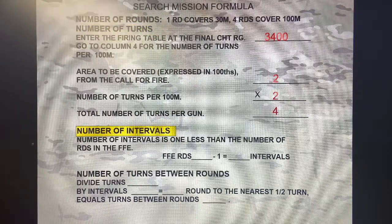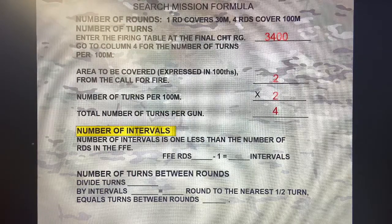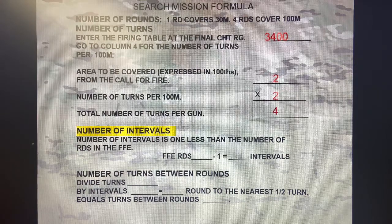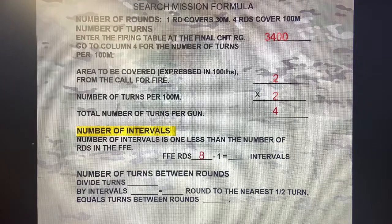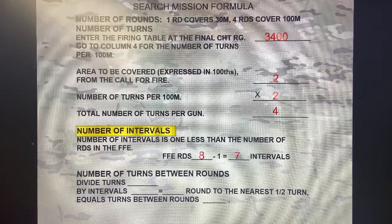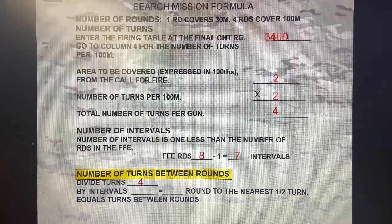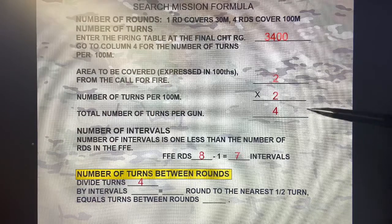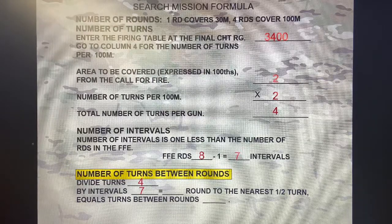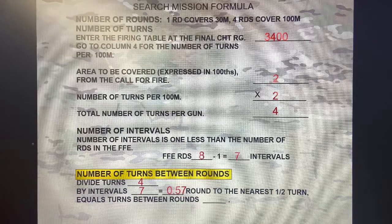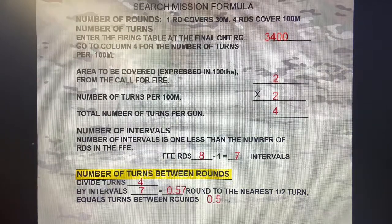Number of intervals is one less than the number of rounds in the fire for effect. Remember, our fire for effect was eight rounds; we minus one to give us 7 intervals. Then lastly, our number of turns between rounds: divide our total turns of 4 by our intervals of 7. That gives us 0.57, which we round to the nearest half turn — so 0.5. That means each gun is going to manipulate their elevation by half a turn: fire, half turn, fire, until their rounds are complete for their total of four rounds per gun.